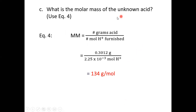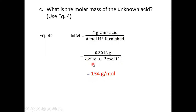Now we find the molar mass of the unknown acid by dividing the grams by the moles, since molar mass is defined as grams per mole. We can do this because the acid is monoprotic — there is one mole of H⁺ for every one mole of the un-ionized acid, so the moles of H⁺ represent the moles of acid. We take the original mass value, divide by the moles of hydrogen ion, and get a molar mass to three significant figures — our final answer.